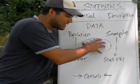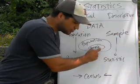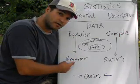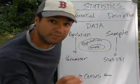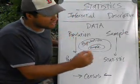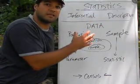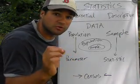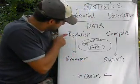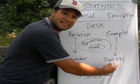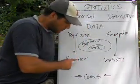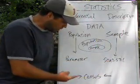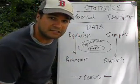You have a population — the whole thing you're interested in. Sometimes you pick a little sample from that population. If you make a calculation from the entire population, that's called a parameter. If you take a sample and make a calculation, that's called a statistic. We use statistics to make inferences about parameters: you take a sample, calculate a statistic, and use it to guess what the parameter is. That process is called inference.